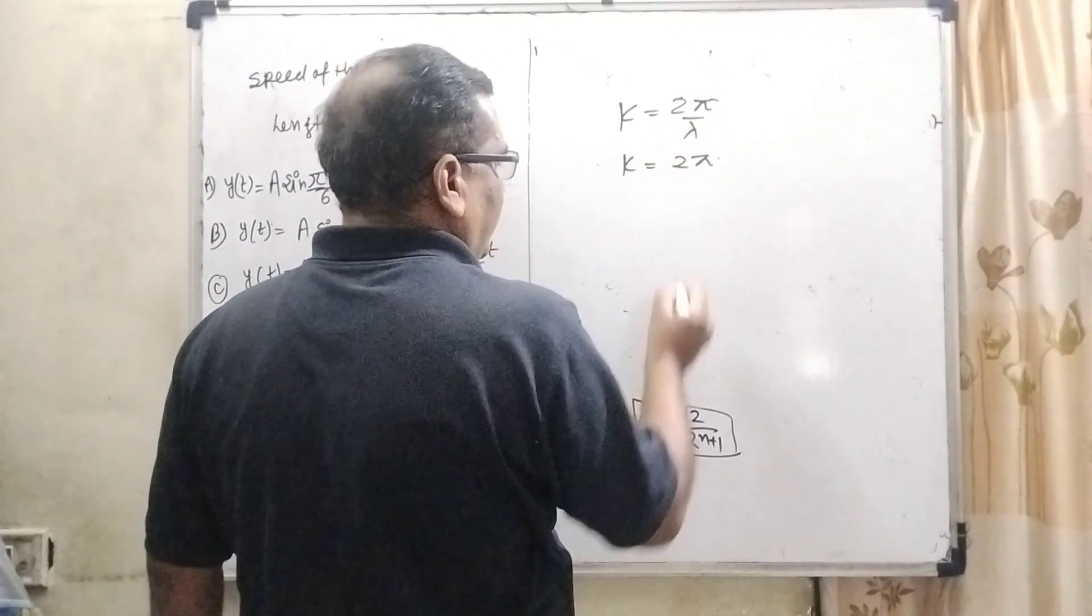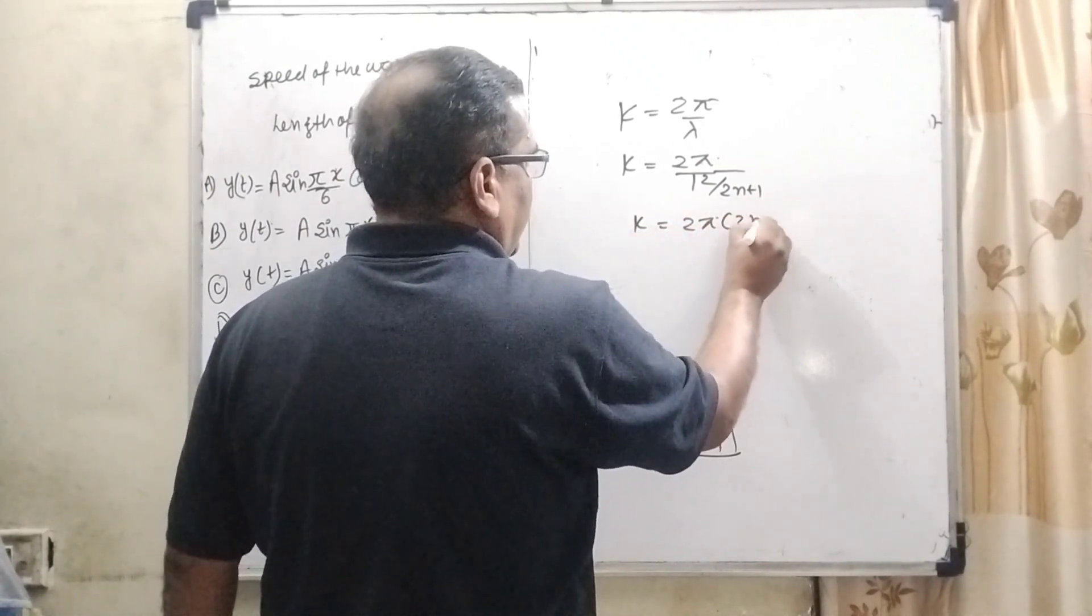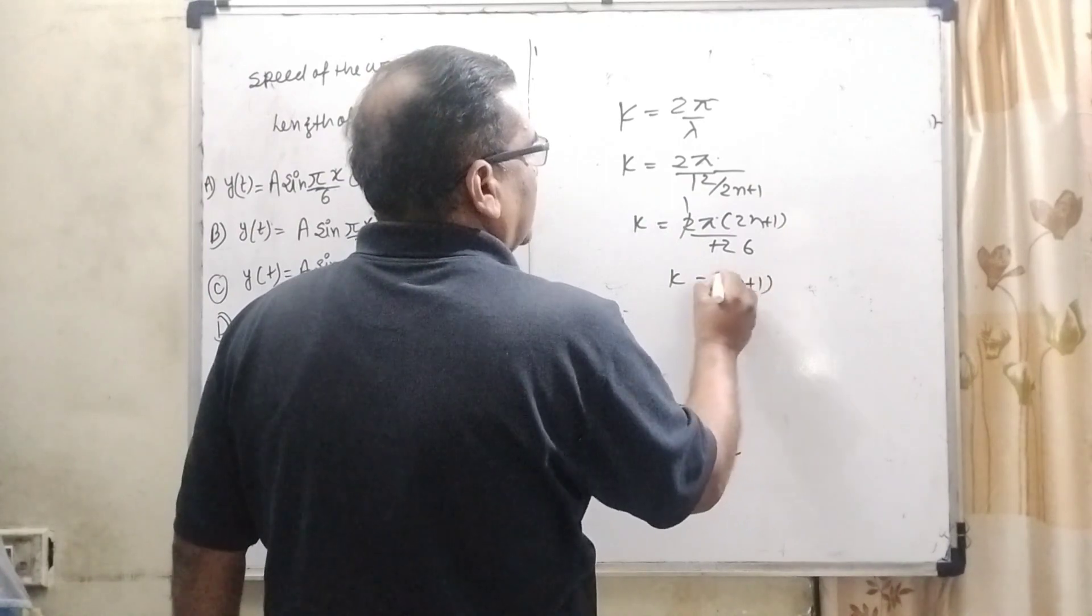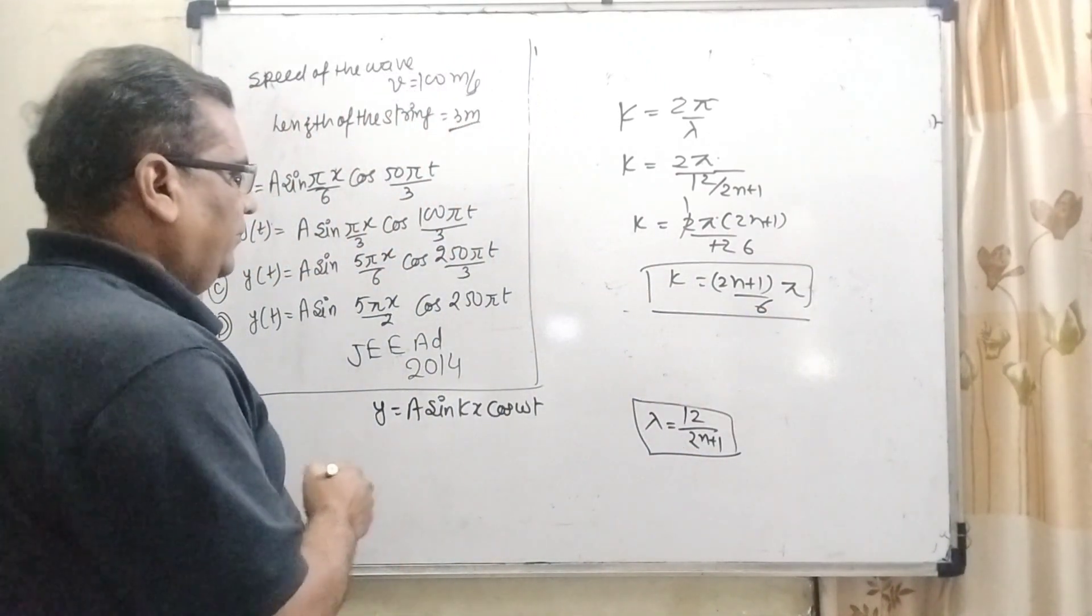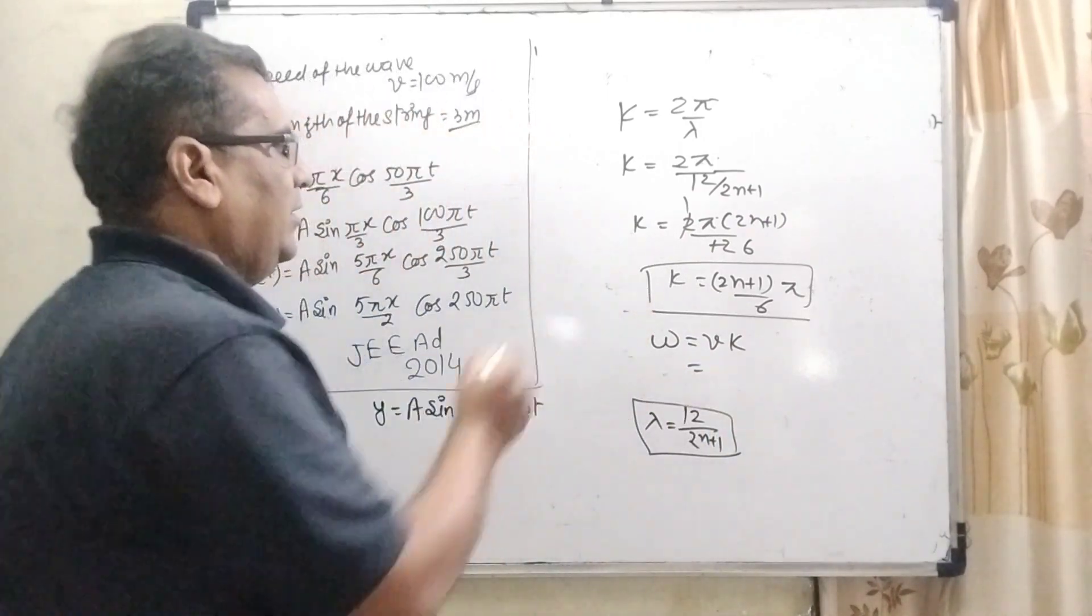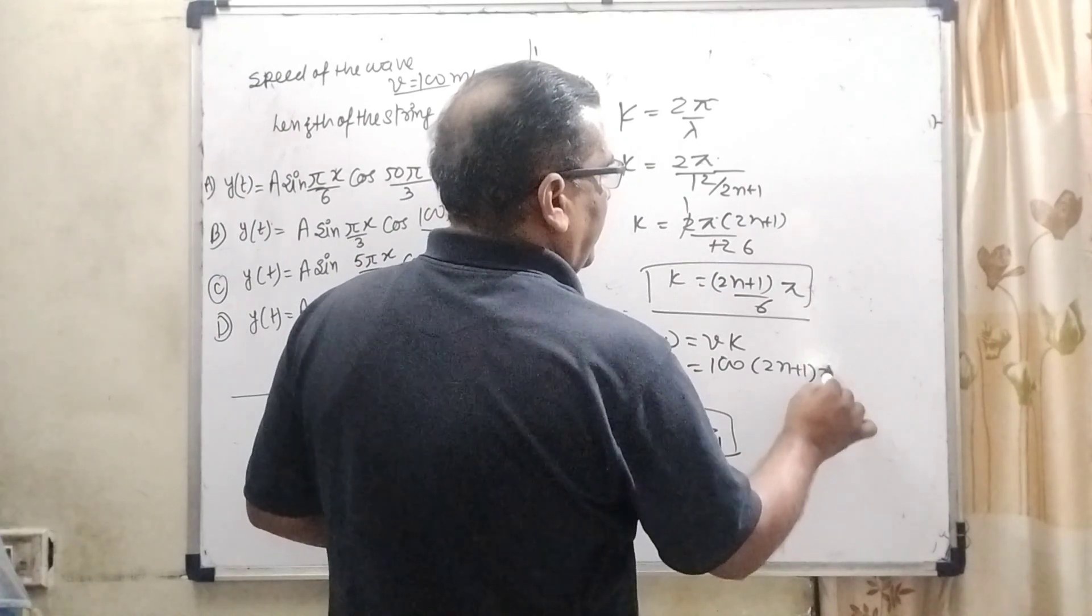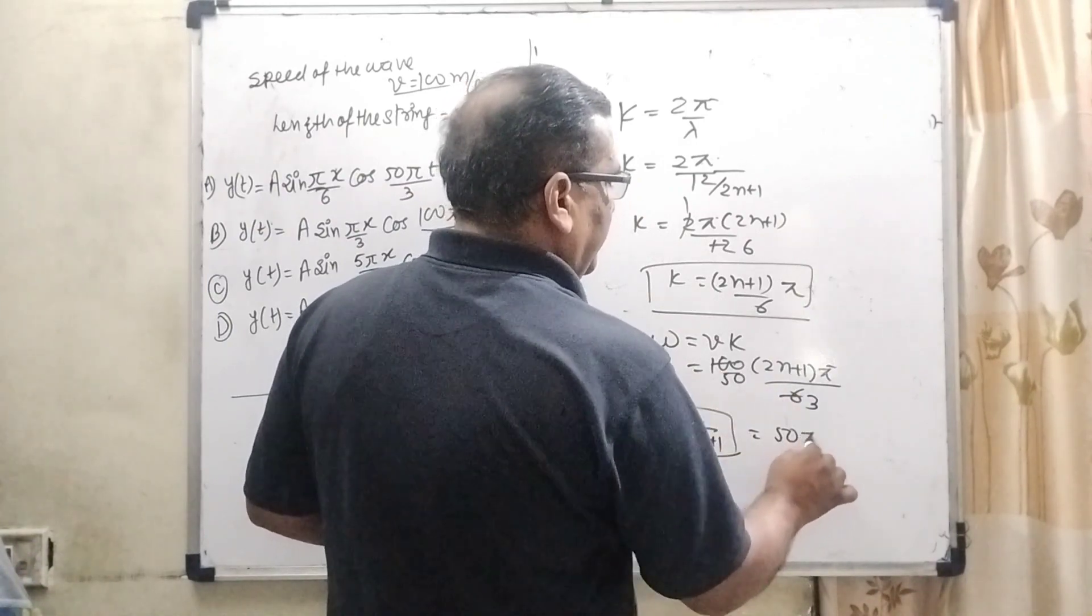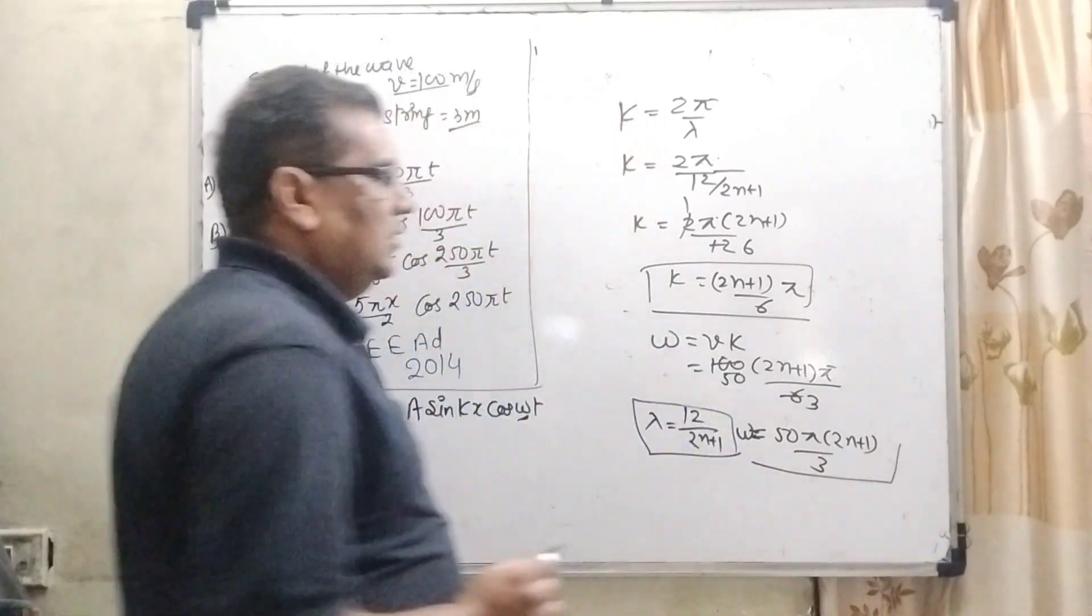k can be written as 2 pi by lambda. So k equal to 2 pi divided by lambda. What is the value of lambda? 12 upon 2n plus 1. When we invert, we get 2 pi into 2n plus 1 upon 12. So k equal to the general form 2n plus 1 pi by 6. Now we need to find angular frequency omega. Omega can be written as vk. Here v is the wave velocity and k we have already found. v is given as 100 and k is 2n plus 1 pi by 6. So we get 50 pi times 2n plus 1 by 3, which is the general formula for angular frequency.